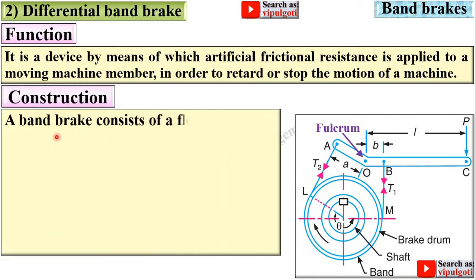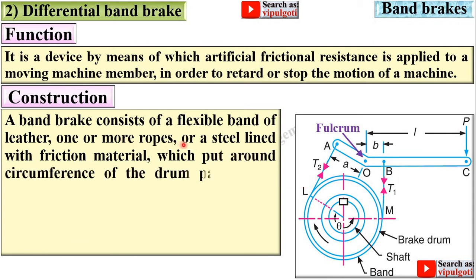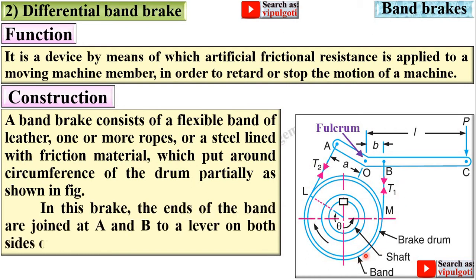Construction: a band brake consists of a flexible band of leather, or it can be one or more ropes or a steel line with friction material, which is put around the circumference of the drum partially. The very important point for the differential band brake is that the ends of the band are joined at A and B to a lever on both sides of the fulcrum, whereas in the simple band brake one end was attached to the fulcrum itself.